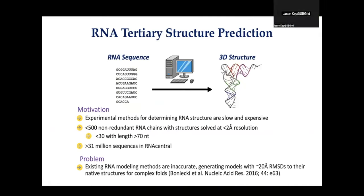Just a little background. The problem is RNA tertiary structure prediction: given an RNA sequence, we want to use computational methods to predict the RNA 3D structure. Experimental methods for determining RNA structure tend to be slow and expensive. There are fewer than 500 non-redundant RNA chains with structure solved at two angstrom resolution, and fewer than 30 with lengths greater than 70 nucleotides. But we have more than 31 million sequences in the RNA central database of non-coding RNA sequences.